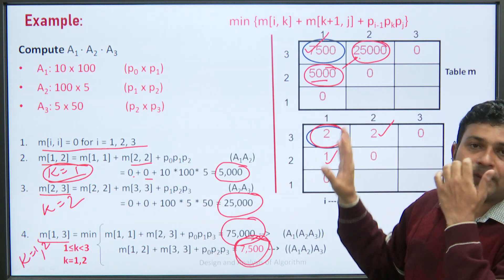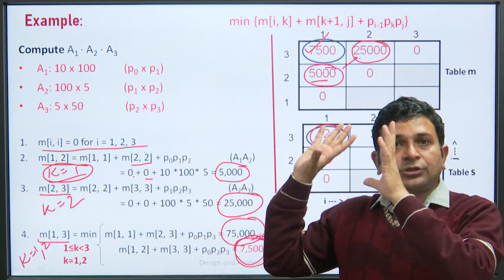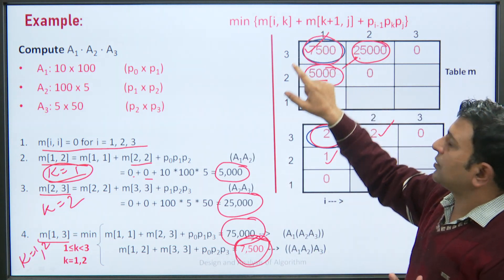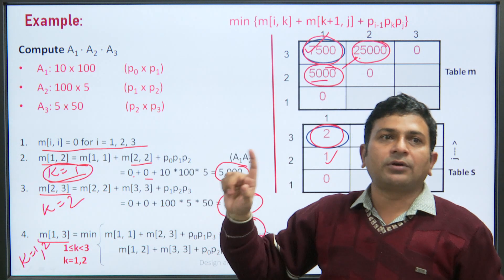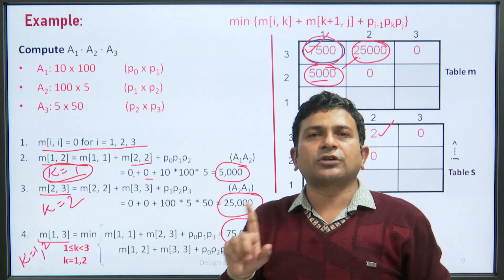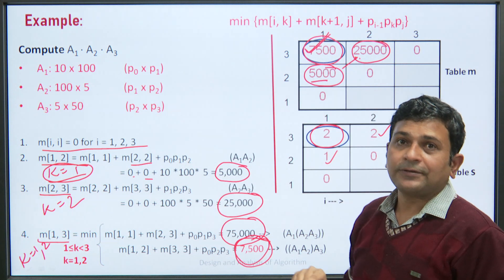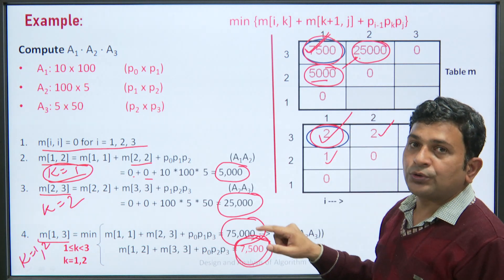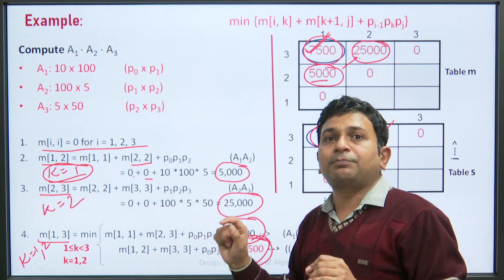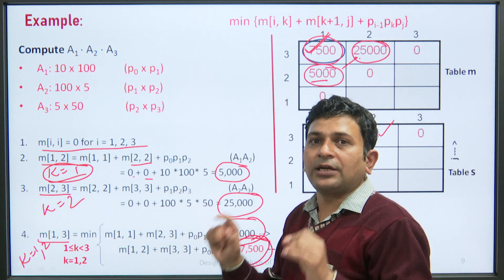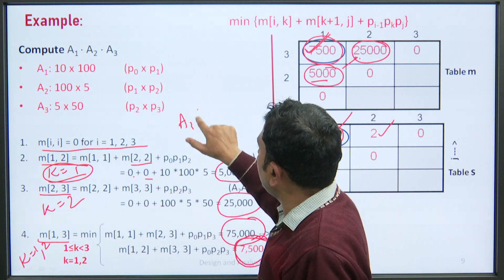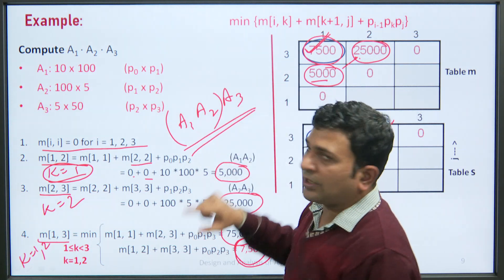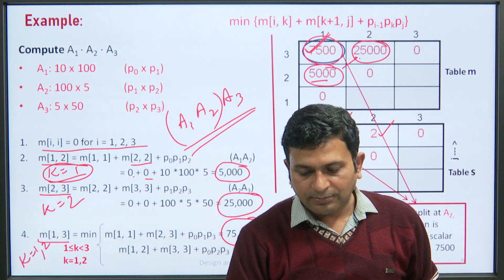The two tables M and S give our answer. The topmost block M[1][3] = 7500 is the total minimum cost of computation. The corresponding value in the S matrix is 2, meaning the second position is where we parenthesize the sequence of matrices to get the minimum scalar multiplications — so (A1·A2)·A3.